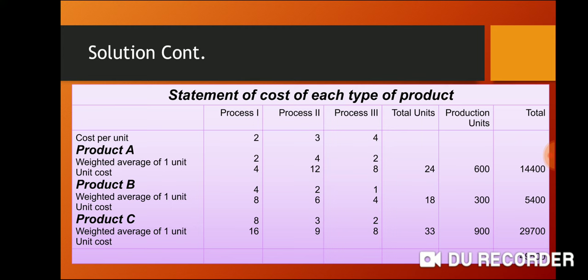Product B: Weighted Average of 4, 2, 1. Total unit cost is 14,400. Product B weighted average is 4, 2, 1.